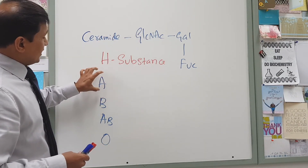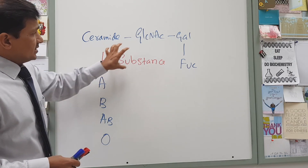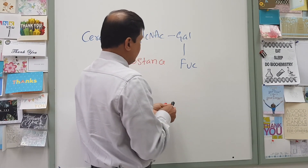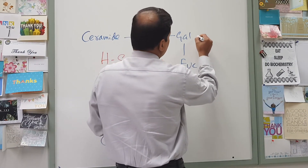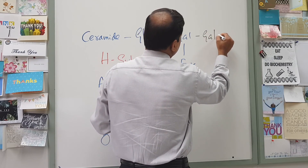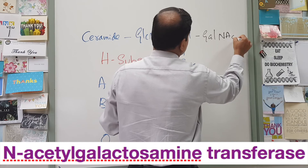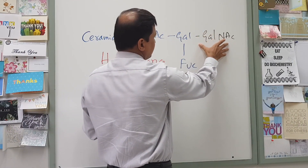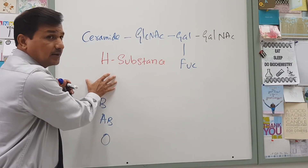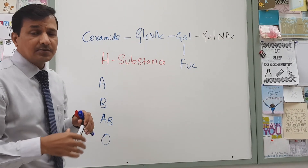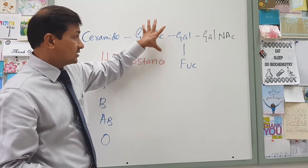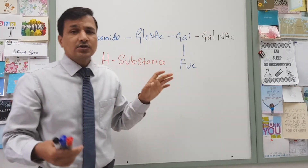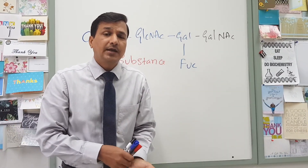Now a person with A blood group — they will have H substance, and additionally through that H substance there will be addition of N-acetylgalactosamine, that is GalNAc. N-acetylgalactosamine will be attached to that galactose. So H substance with N-acetylgalactosamine is basically the type A antigen. That particular red blood cell means the person has type A antigen — this is the type A antigen with N-acetylgalactosamine added to H substance, so that person belongs to the type A blood group.